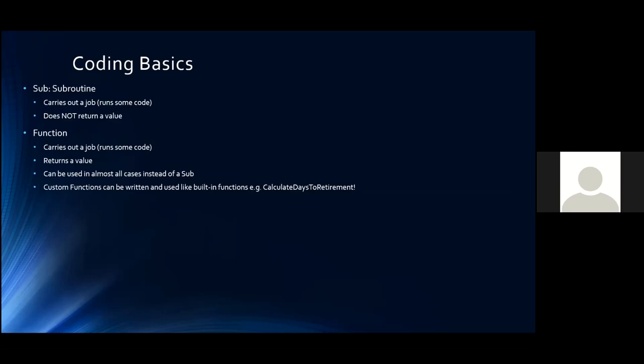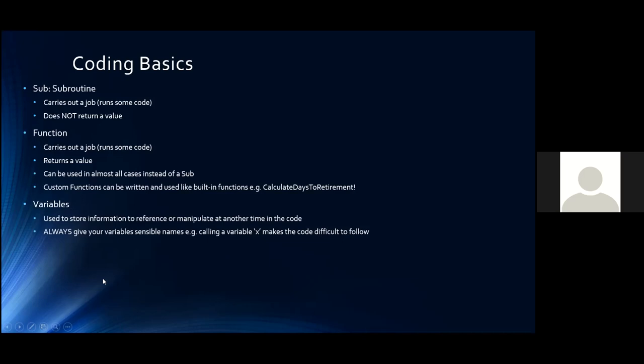You can also use a function to write a custom function — it can be used like a built-in function in Excel. For example, you could write a function called 'calculate days to retirement' so every time you open Excel it tells you how many days you have left. Variables are used to store information to reference or manipulate at another time in code — the bread and butter of coding. Most importantly, always give your variables sensible names; calling a variable X makes the code very difficult to follow when you come back to it.